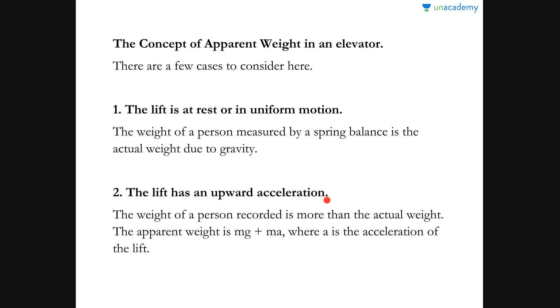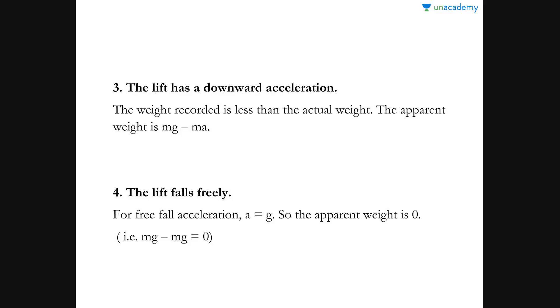The second case: the lift has an upward acceleration. If the elevator moves with acceleration a upward, the apparent weight recorded by the spring balance is more than the actual weight. The apparent weight is mg + ma, where ma is the force due to the acceleration of the lift. Because the lift accelerates upward — opposing the downward gravitational force — the net result is a sum of mg and ma, where a is the upward acceleration of the lift.